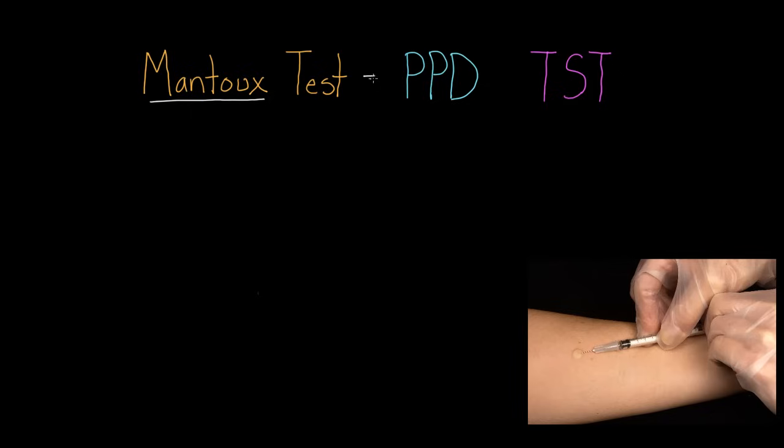Another way you might hear this referred to is a PPD or a TST. The PPD stands for Purified Protein Derivative and actually gives us a clue as to what we're using in this test, which is that we're using specifically TB protein. The location of the test is also going to be kind of a clue here with TST. This is a tuberculin, again referring to tuberculosis, tuberculin skin test.